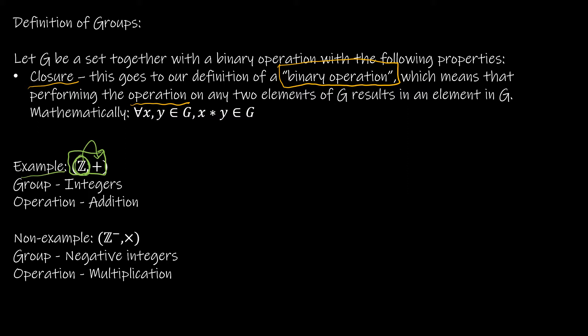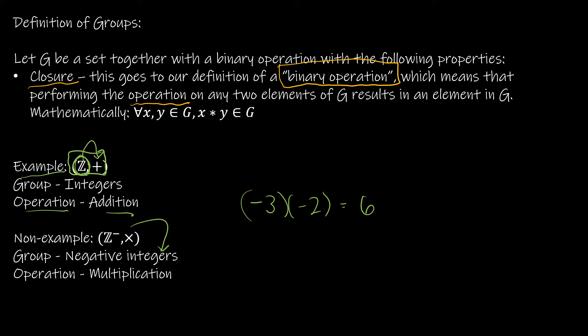The group is integers under the operation addition. A non-example would be Z with a superscript of negative, which just means negative integers, under the operation of multiplication. Why is that not closed? Because I could take negative three times negative two — those are two elements in the set of negative integers — but when I multiply them, I get positive six, which is an integer but not a negative integer. Therefore, this is not closed, and the set of negative integers under multiplication is not a group.